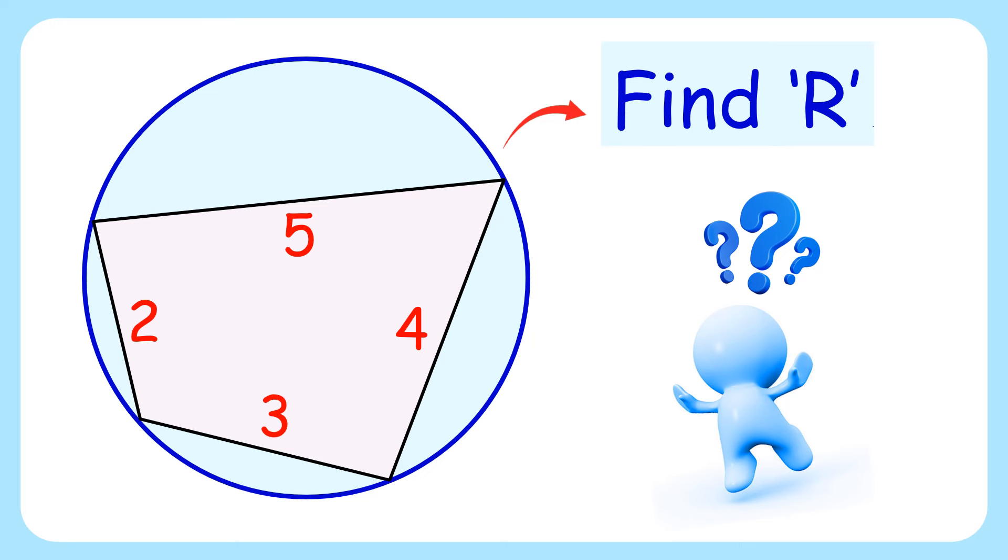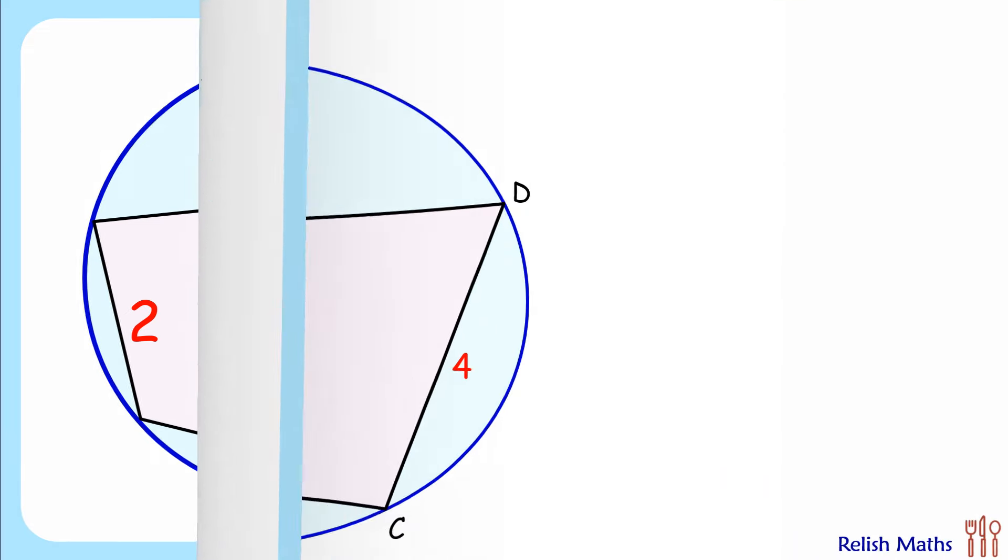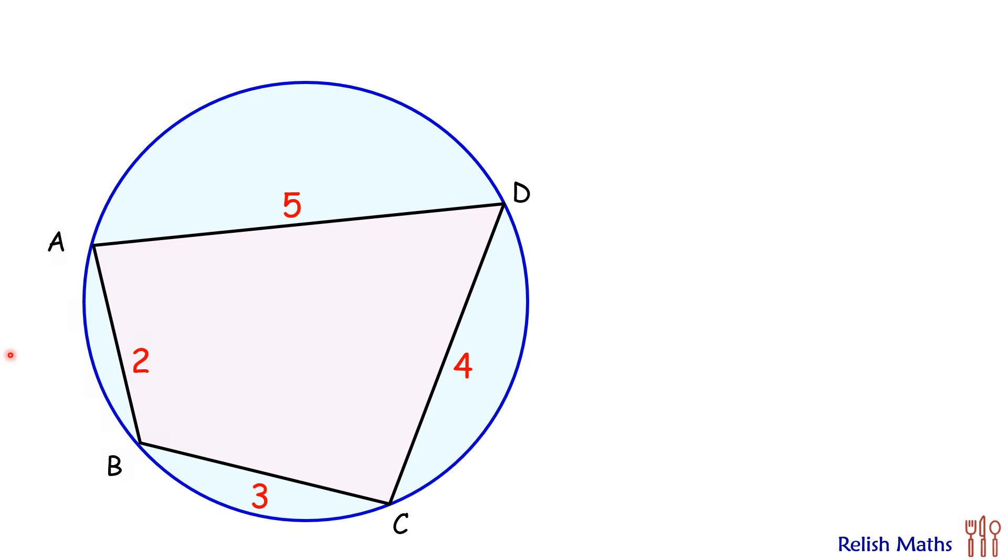In this interesting question, given is a circle with a quadrilateral inscribed in it. If the side lengths of the quadrilateral are given, we have to find the radius of the circle. Let's check the solution.